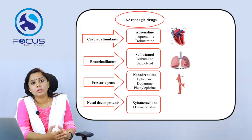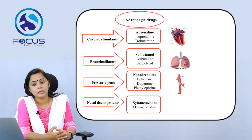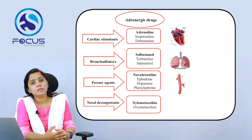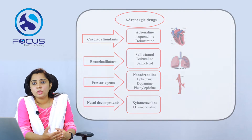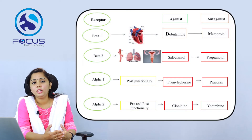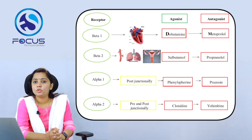Adrenergic drugs come under four groups, mainly based on their action. We have cardiac stimulants — prototype drugs are adrenaline, dobutamine, and isoprenaline. We have bronchodilators — salbutamol and salmeterol. The pressor agents — noradrenaline. And nasal decongestants — oxymetazoline and xylometazoline. Adrenergic drugs act mainly via two receptors: the beta receptors and the alpha receptors. Based on that, we have beta-1, beta-2, alpha-1, and alpha-2 receptors.